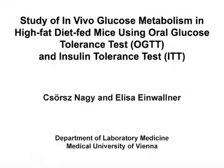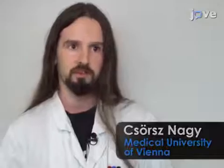The overall goal of these procedures is to characterize the general metabolic phenotype of mice and to specifically assess alterations in glucose metabolism in vivo. These methods can help answer key questions in the field of metabolism. They are representative and powerful tools to investigate the influence of genetic, pharmacological, or dietary factors on glucose metabolism in vivo. The main advantage of these techniques is that they are relatively easy to perform.